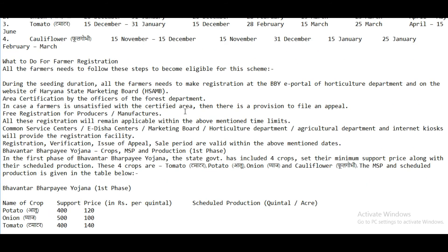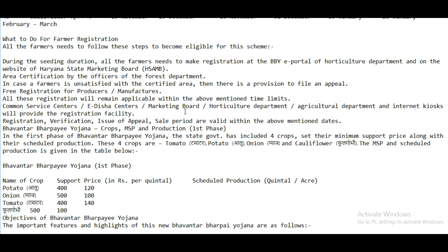Regarding eligibility criteria: during the seeding duration, all farmers need to register at the ePortal of the Horticulture Department and on the website of the Haryana State Marketing Board. Area is certified by officers of the Horticulture Department, and if a farmer is unsatisfied with the certified area, there is a provision to file an appeal. Registration is free for producers. All registrations will remain valid within the mentioned time limits. Registration facilities are available at Common Services Centres, E-Diksha Centres, Marketing Boards, Horticulture Department, Agriculture Department, and Internet Cafes.